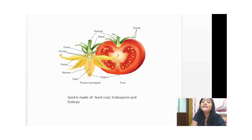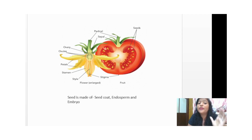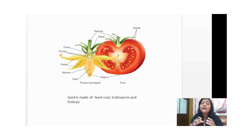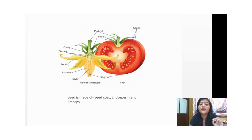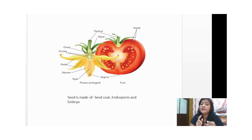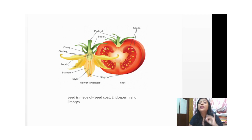Now, how is the seed formed? In the plant there's an ovary — remember the ovary forms the fruit, and the ovules present inside the ovary form the seed. So in this diagram you can see the ovules present inside the ovary; these ovules take the form of the seed. Basically, a seed is composed of three things: the seed coat, the endosperm, and the embryo.